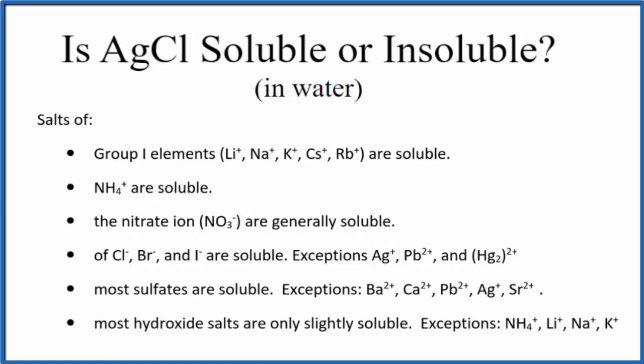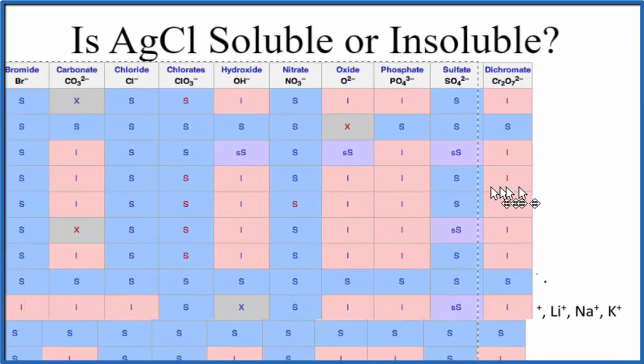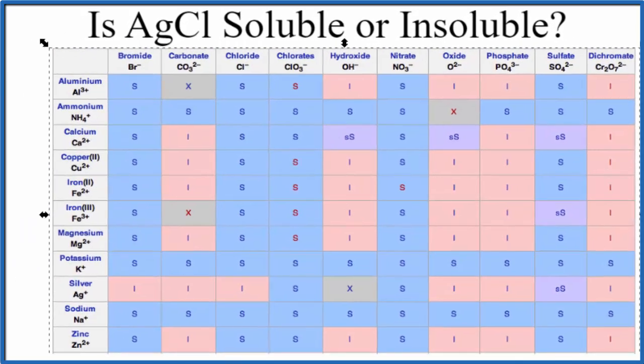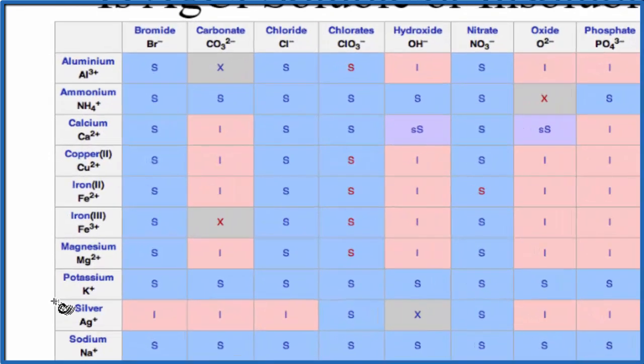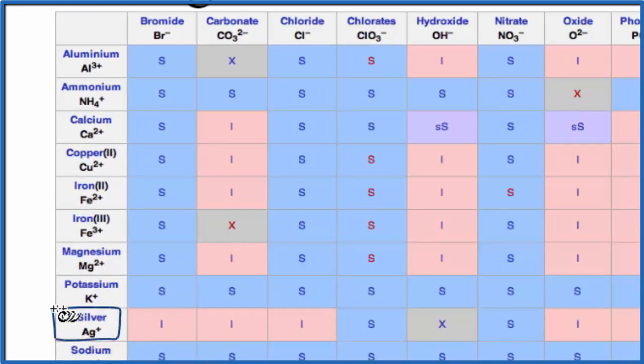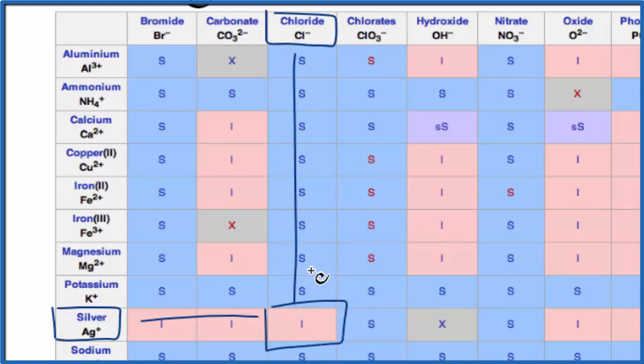We could also look at a solubility table. So here is the solubility table. We're going to look down. These are the positive ions. And silver's right here, Ag+. Across the top, there's chloride, Cl-, so we go over and down, and that I, that means that AgCl is going to be insoluble in water.